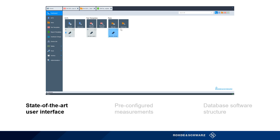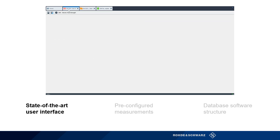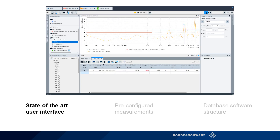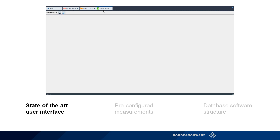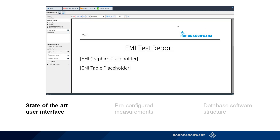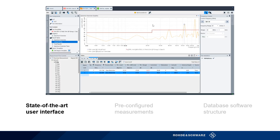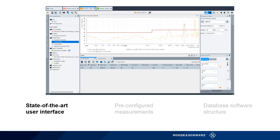ELECTRA is designed to maximize efficiency in the lab with a state-of-the-art user interface. From installing the software to setting up a measurement and creating a report with your own company's logo, ELECTRA is straightforward and easy to use. Users can take full advantage of flexible dashboards as well as interactive measurement displays.